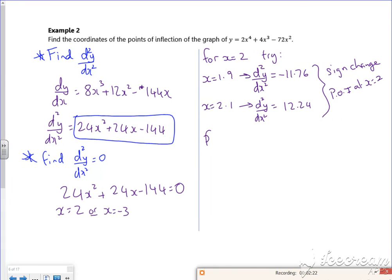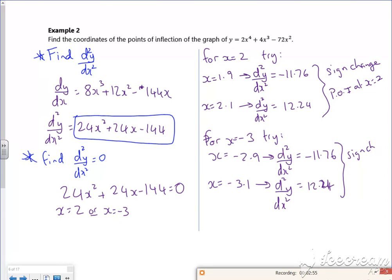Now if I try x = -3, I'll try -2.9, which gives -11.76. And if I try -3.1, so I'm looking on either side of the -3, it's 12.24. So once again I've got a sign change, and my point of inflection is at x = -3.